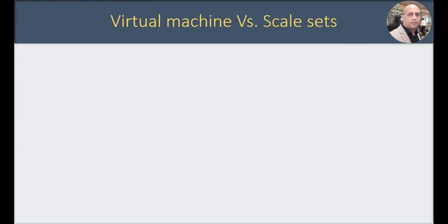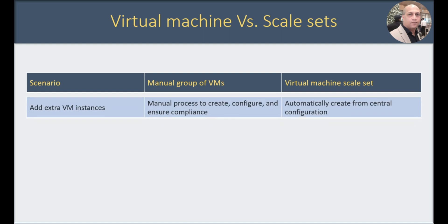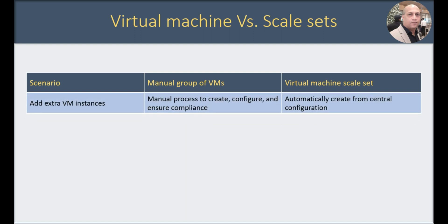What's the difference between managing virtual machines on your own in a group versus a scale set? Consider a scenario where you would like to add an extra VM instance to the group of VMs you are already manually managing. That process is manual — you create, configure, and ensure compliance. Whereas in a virtual machine scale set, it gets done automatically.